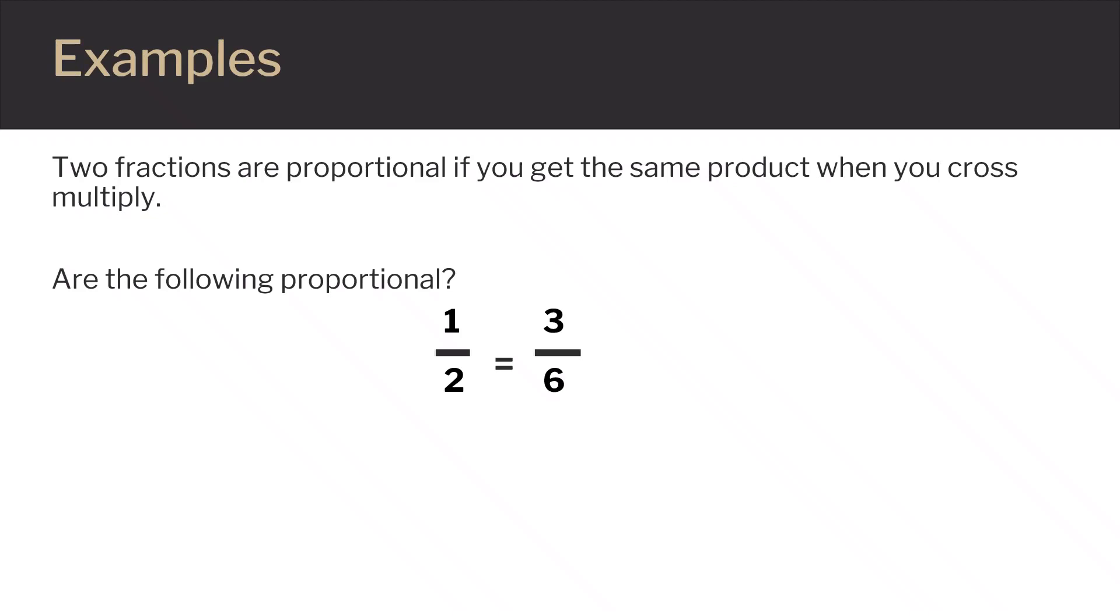Let's look at some examples. To determine if two fractions are proportional we are going to cross multiply and compare the results. We are going to check to see if one-half is proportional to three-sixths. Start by multiplying diagonally which means the top of the left fraction multiplied by the bottom of the right fraction. This gives us one times six which equals six.